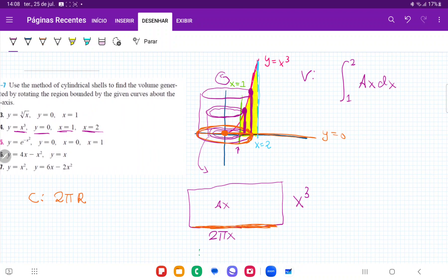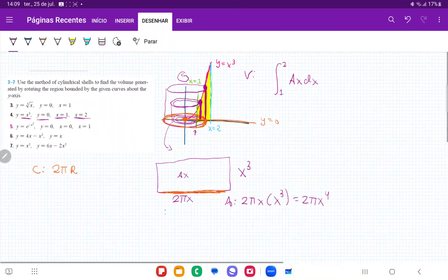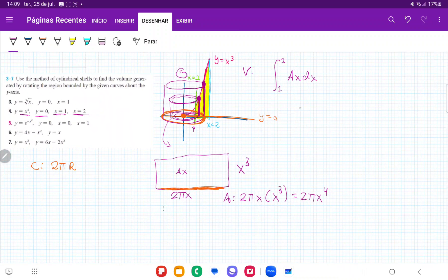And so my area is just 2π times wherever I'm at x times the height, which is x cubed. Therefore, my area here is given by 2π x times x cubed, which is equal to 2π times x to the power of four. So now that we have this, we're ready to integrate.